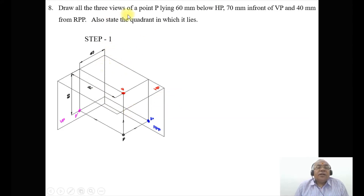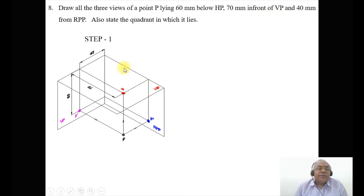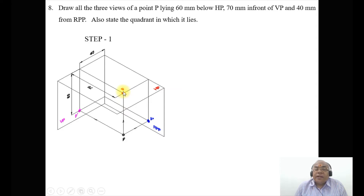Since it is in the fourth quadrant, the point lies 60 mm below HP and 70 mm in front of VP. When you look from the front view or the top view, you can see the distance in front of VP — from here to here — which is projected onto the horizontal plane.